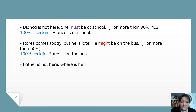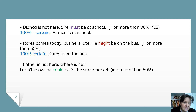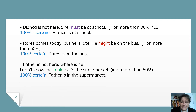Now let's go further. Father is not here. Where is he? I don't know. He could be in the supermarket. Once more, I am 50% sure — 50% yes that he is in the supermarket, 50% no. So he could be. I choose could: he could be in the supermarket. With 100% yes, when I am certain, then I say father is in the supermarket — not could be or might be. He is in the supermarket.